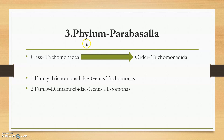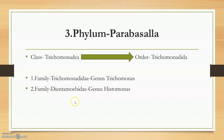The third phylum is phylum Parabasalia. It has the class Trichomonadea and the order Trichomonadida. Within this order there are mainly two families: the first family is Trichomonadidae, with the genus Trichomonas; the second family is Dientamoebidae, with the genus Histomonas.